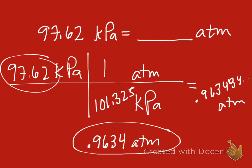So this is going to be 0.9634 atms. In other words, just a little bit below normal atmospheric pressure of 1 atm. We'll do one more.